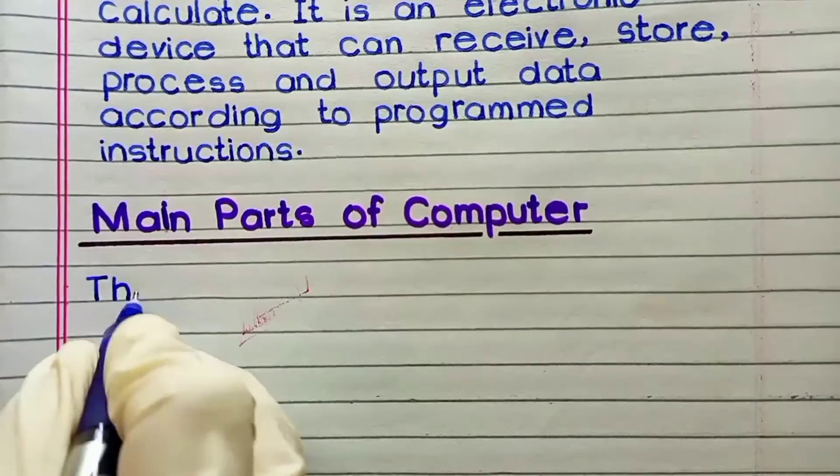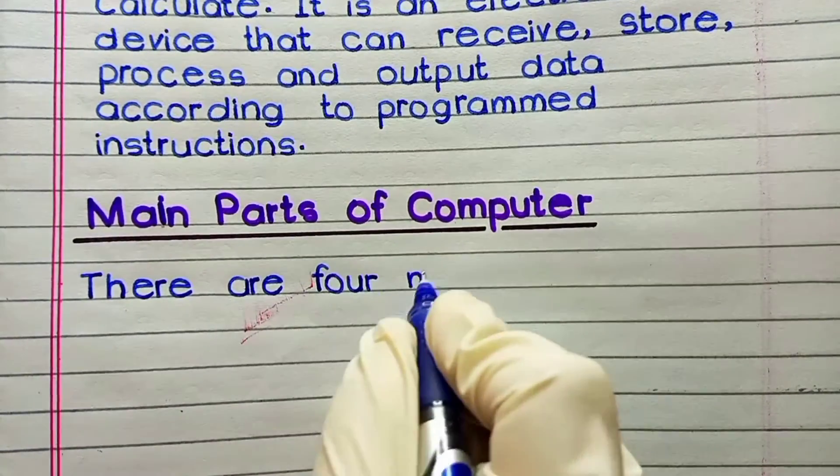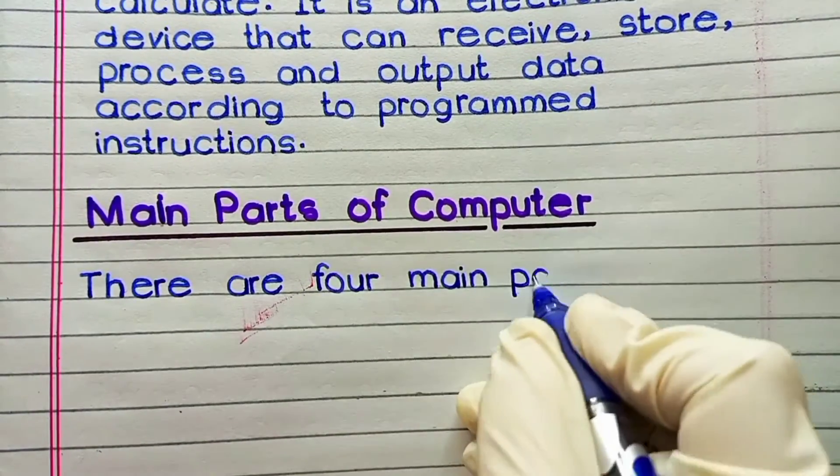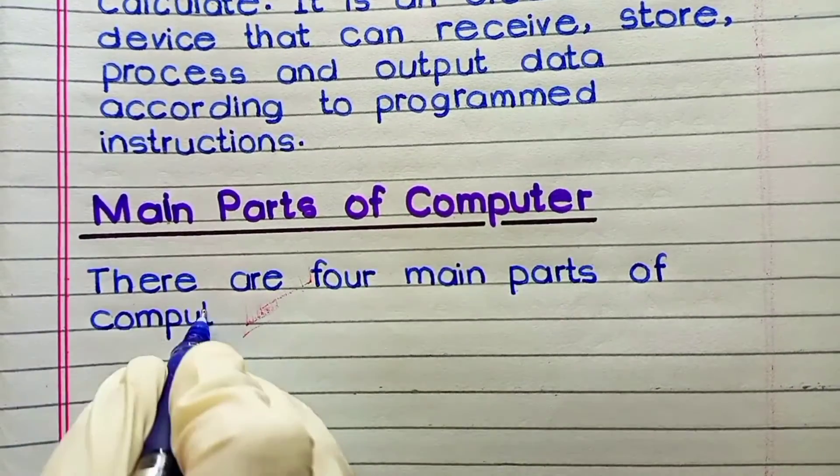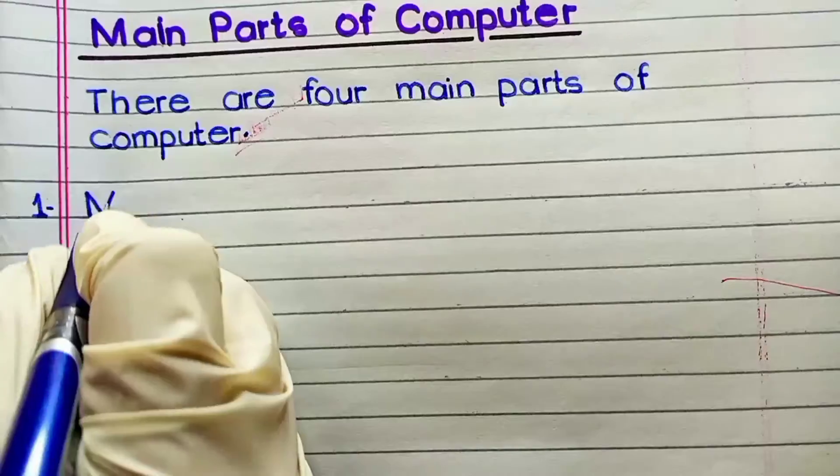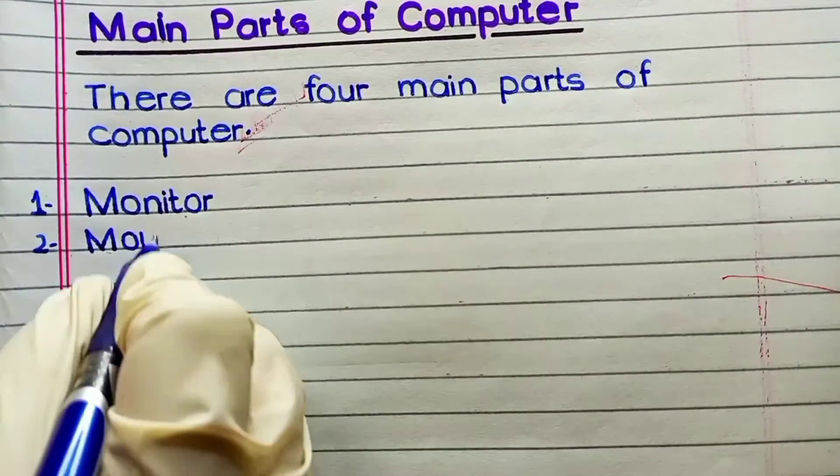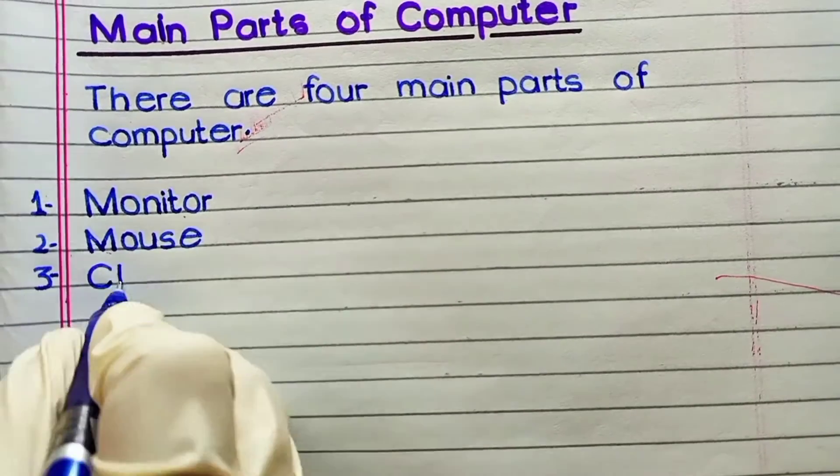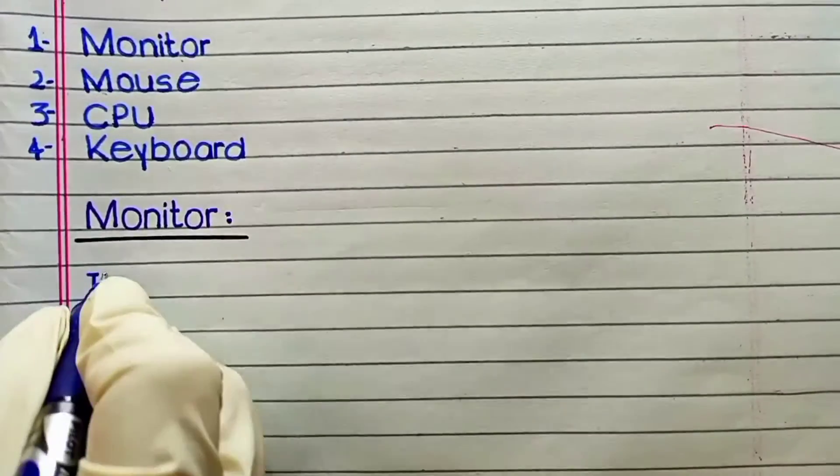Main parts of computer. There are four main parts of computer. Number first one is monitor. Number second, mouse. Number third, CPU. Number four, keyboard.